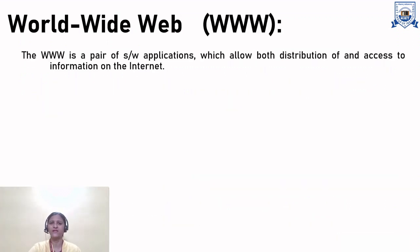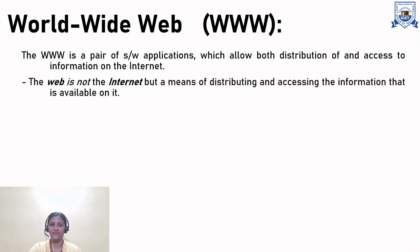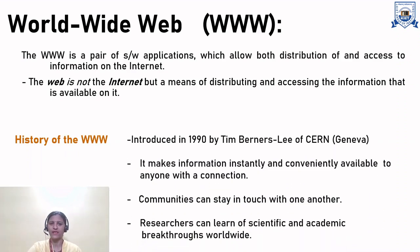World Wide Web. What is WWW? Basically, it is a pair of software applications which allow both distribution of and access to the information on the Internet. The web is not to be confused with the Internet — it is not the Internet, but a means of distributing and accessing the information available on it. The history of WWW: introduced in 1990 by Tim Berners-Lee. It makes information instantly and conveniently available to anyone with a connection. Communities can stay in touch with one another, and researchers can learn of scientific and academic breakthroughs worldwide.